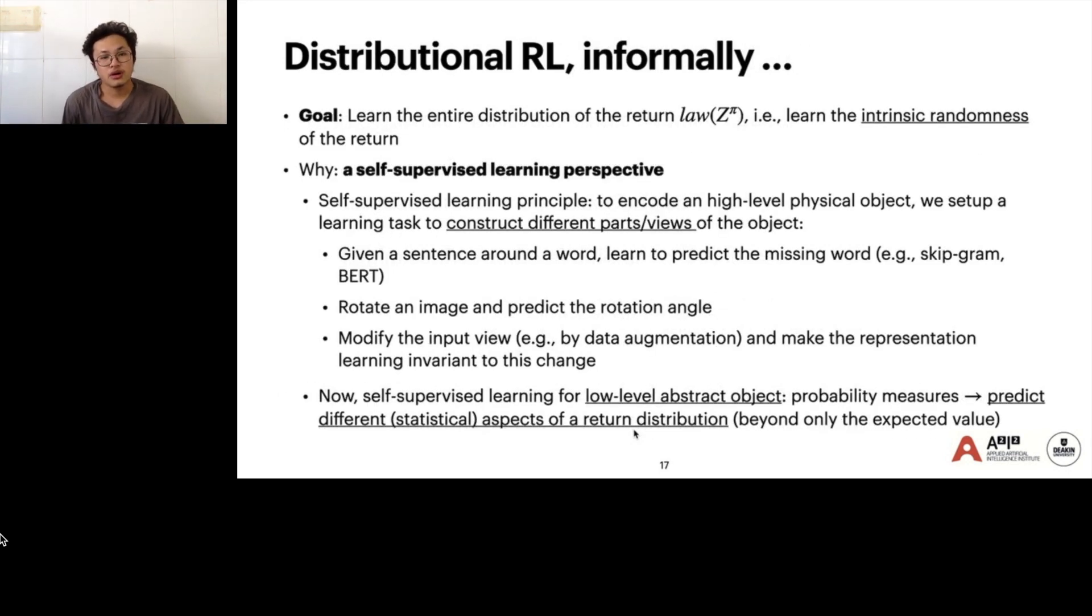So what is distributional RL? Informally, it learns the entire distribution of the return. It learns the intrinsic randomness of the return. Why distributional RL? We can take a self-supervised learning perspective. In general, self-supervised learning principle tries to encode a high-level physical object. We set up the learning task to reconstruct different parts of the object. But here in distributional RL, we construct a self-supervised learning for low-level abstract object, which is probability measure.